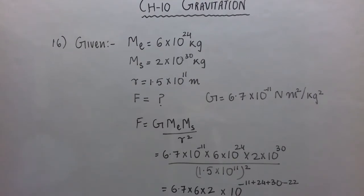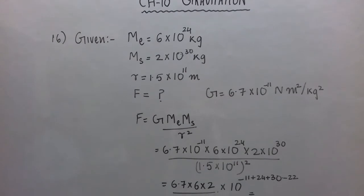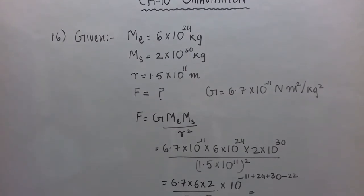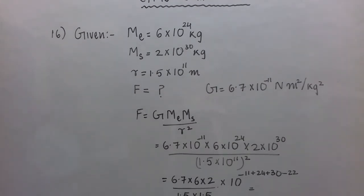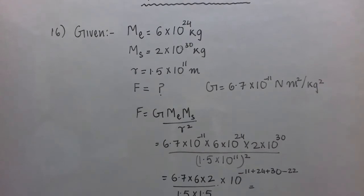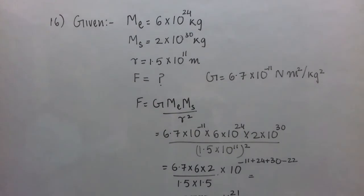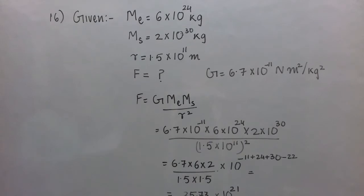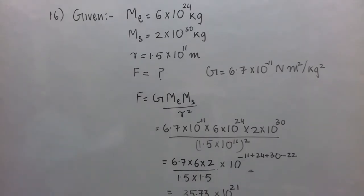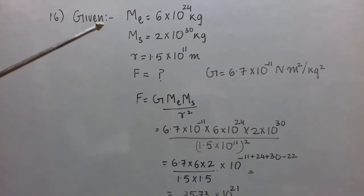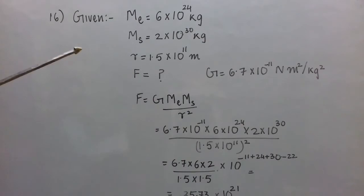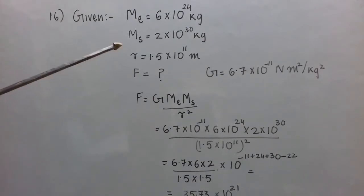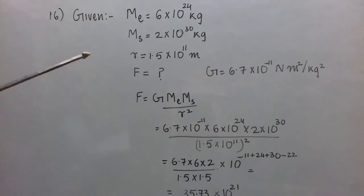16th question: Calculate the force of gravitation between the Earth and the Sun. Given: mass of the Earth ME is 6 × 10²⁴ kg, mass of the Sun is 2 × 10³⁰ kg, and the average distance between the two is r equal to 1.5 × 10¹¹ meters.